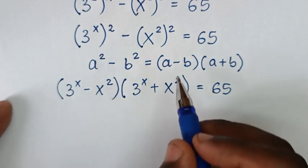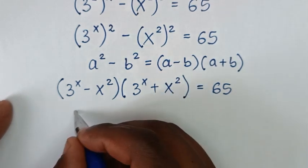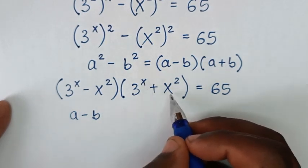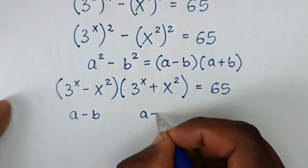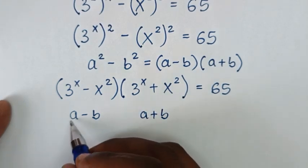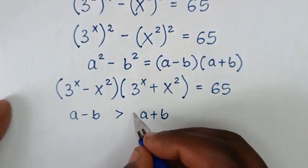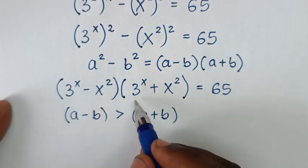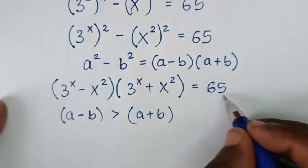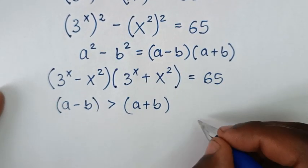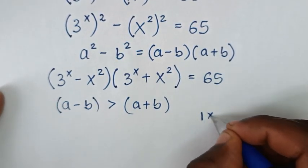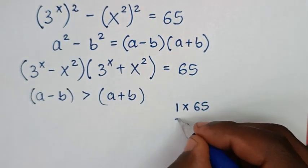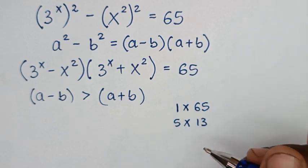Here, 3 power of x minus x squared is in the form of (a minus b). When we compare with 3 power of x plus x squared, which is the form (a plus b), we can see a minus b is less than a plus b. Because this is a multiplication equal to 65, it is either a multiplication of 1 times 65, which are natural numbers, or 5 times 13, which are natural numbers.